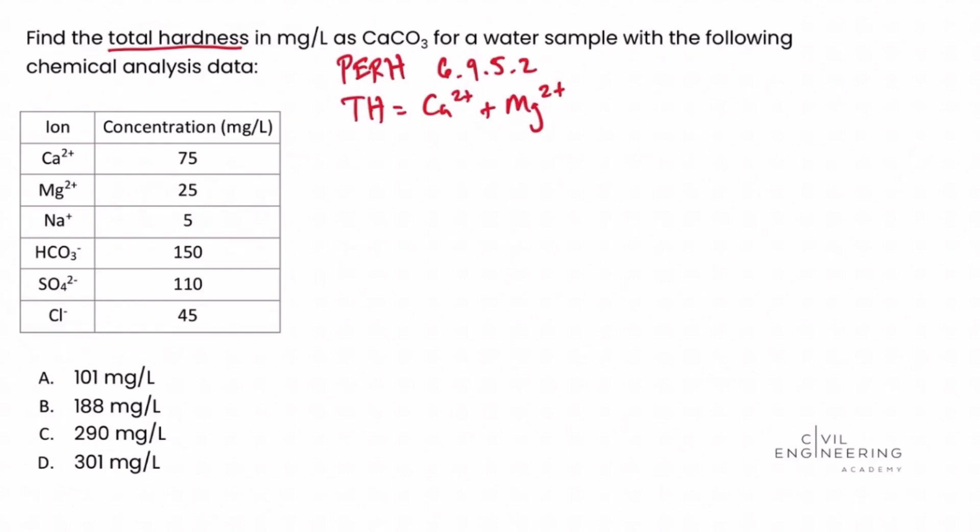To solve this, we're going to use a basic unit conversion. We're going to solve for the milligram per liter concentration as calcium carbonate equal to the concentration in milligrams per liter of the species, that's the individual ion, times the equivalent weight of calcium carbonate over the equivalent weight of the species, which again is the ion. That information we will get from that chart in section 6.9.5.2 of the PE reference handbook.